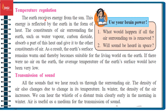The earth receives energy from the sun. This energy is reflected by the earth in the form of heat. The constituents of air surrounding the earth, such as water vapour and carbon dioxide, absorb a part of this heat and give it to other constituents of air. As a result, the earth's surface remains warm and thereby becomes suitable for the living world. If there were no air on the earth, the average temperature of the earth's surface would have been very low.